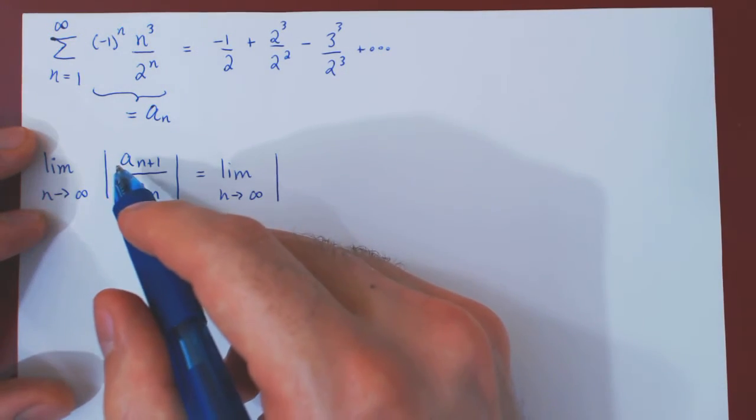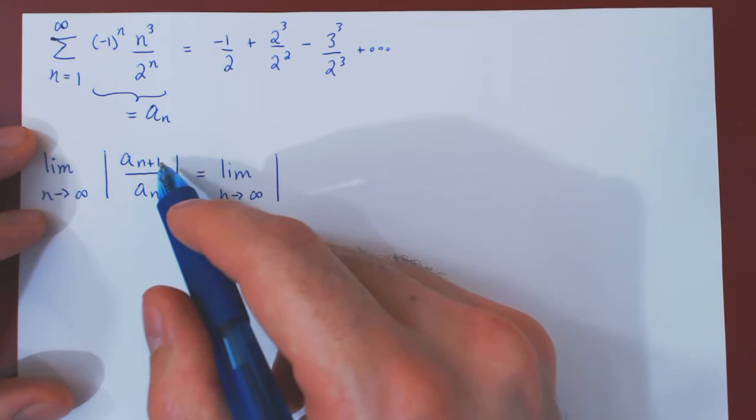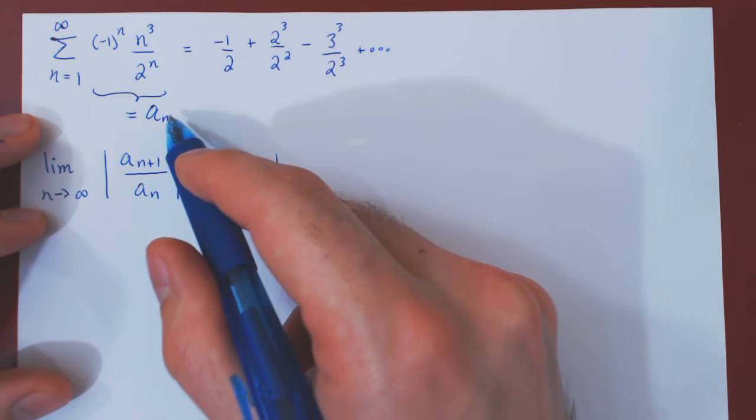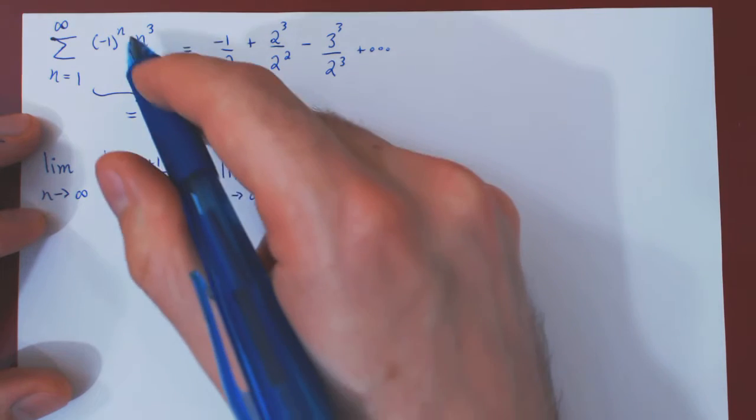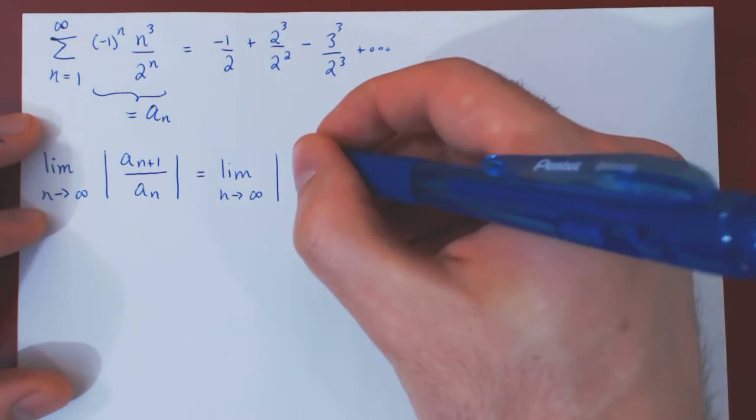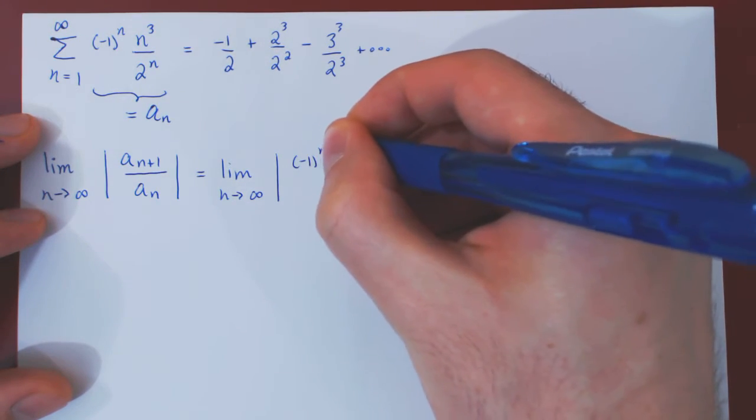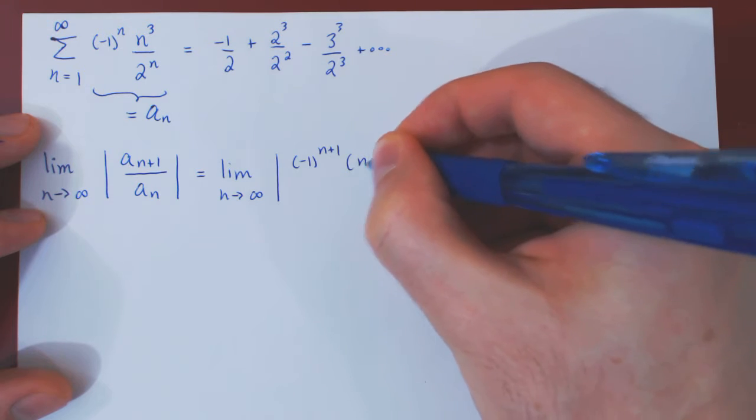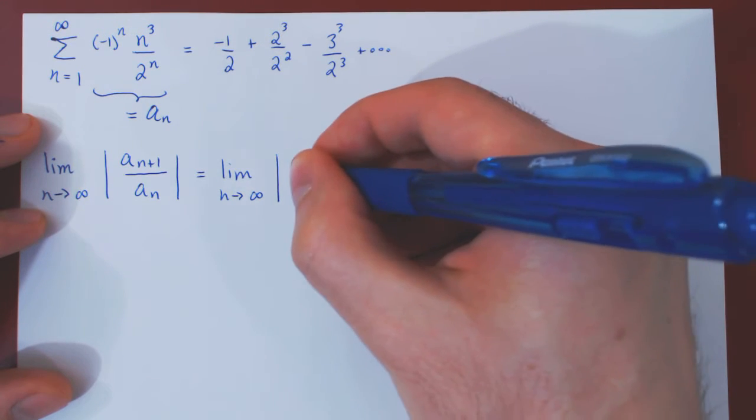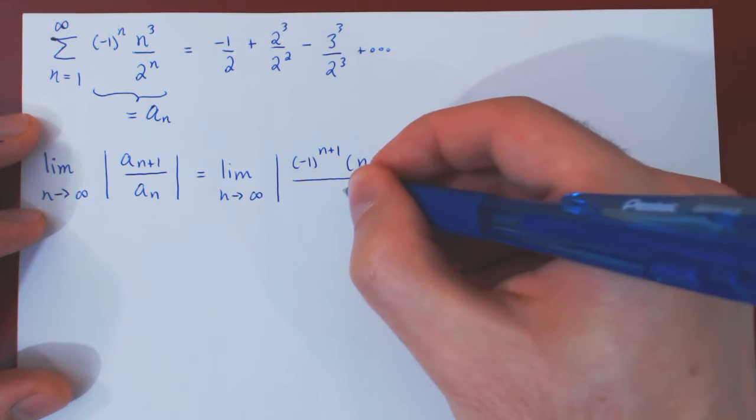So let's calculate, or compute, a_{n+1}. So replacing n by n+1 in the expression will give us (-1)^{n+1} times (n+1)^3 over 2^{n+1}.